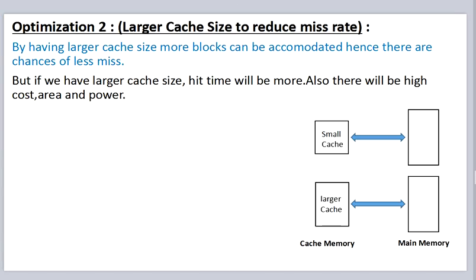The second optimization is larger cache size to reduce miss rate. By having a larger cache size, more blocks can be accommodated, hence there are chances of fewer misses. But if we have a larger cache size, hit time will be more, and there will also be higher cost, area, and power.